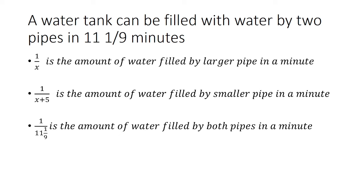Now we can combine 1 over x with 1 over x plus 5. I'm going to set that equal to 1 over 11 and 1/9.